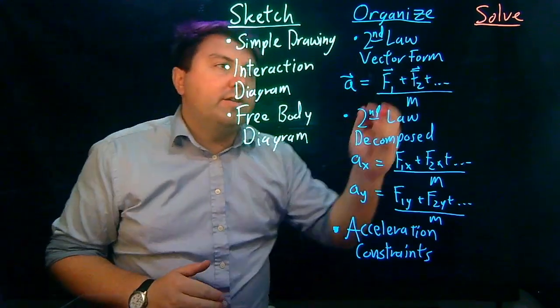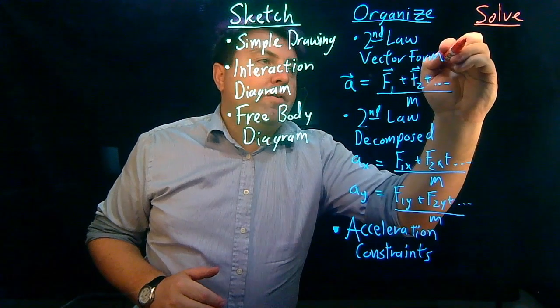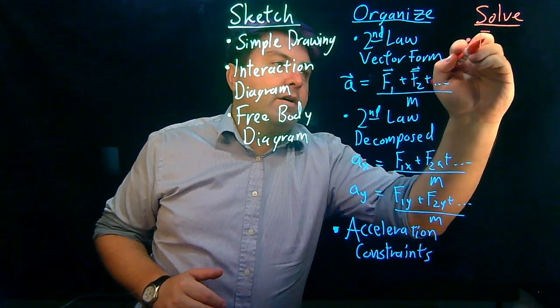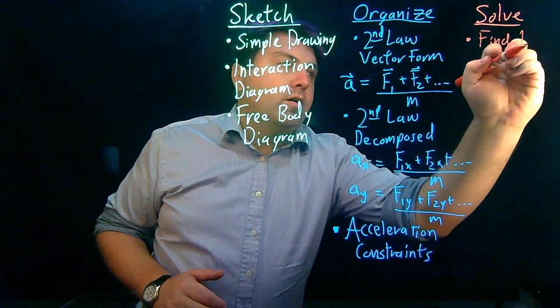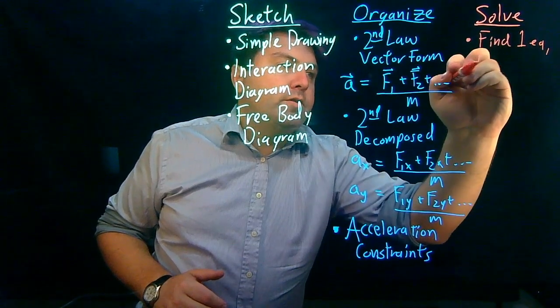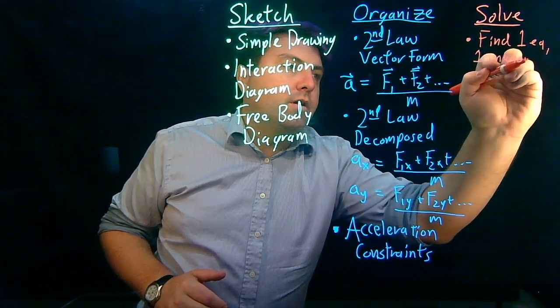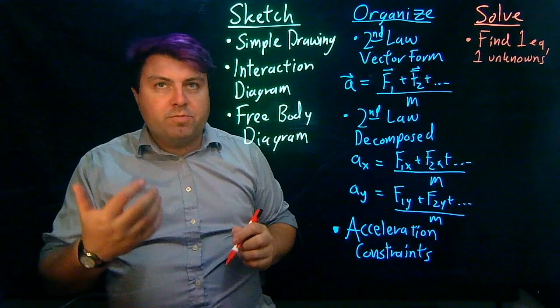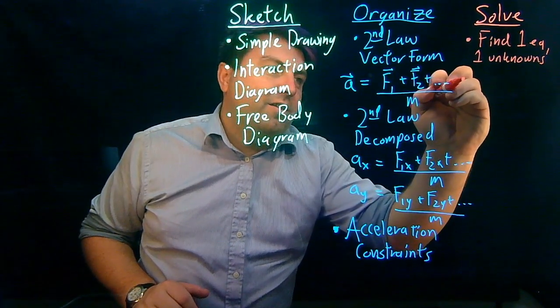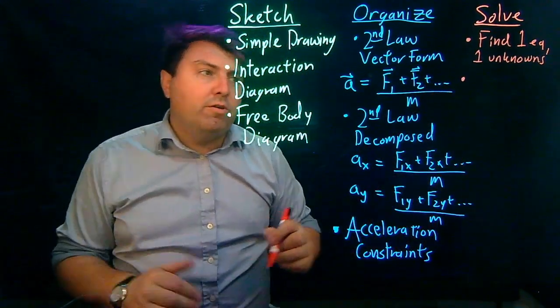Once we have all that, then we are ready to solve. So if we're solving, we want to try to find one equation, one unknowns, and solve those first just because that's a lot easier than other things. If we need to do two equations, two unknowns...